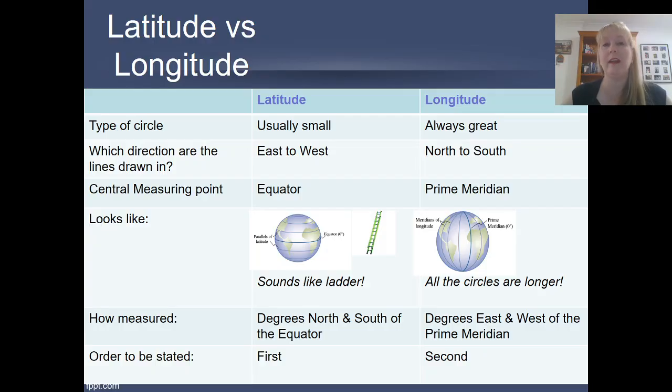Our central measuring point for our latitude is the equator and we measure above and below that. So you could think of it almost like a number line positive and negative and that will make a bit more sense shortly. And we've got our prime meridian for the longitude.